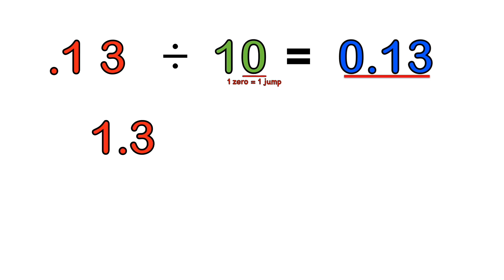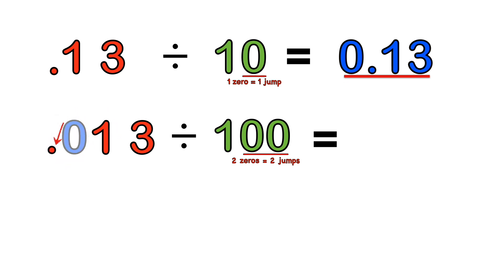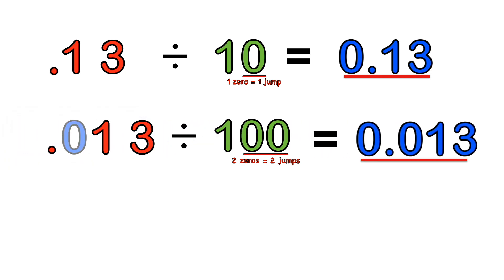For 1.3 divided by 100: since we already have the decimal point, we count the zeros. Two zeros equals two jumps to the left. We move the decimal point two places to the left — there is one blank jump, so we put a zero as a space filler. We can read the answer as 0.013. So 1.3 divided by 100 equals 0.013.